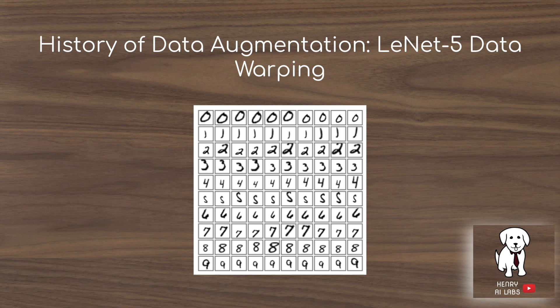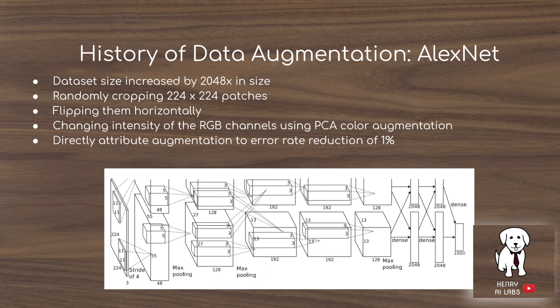Data augmentation has been applied a lot in the history of computer vision. In LeNet-5 on the MNIST recognition task, they did data warping to get more out of their MNIST dataset. AlexNet also uses data augmentation, increasing the ImageNet dataset by a factor of 2048. They do this by randomly cropping 224×224 patches, flipping them horizontally, and changing the intensity of the RGB channels. They directly attribute augmentation in the AlexNet paper to a 1% error rate reduction.